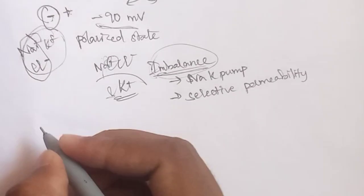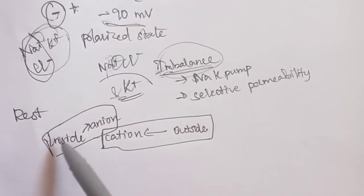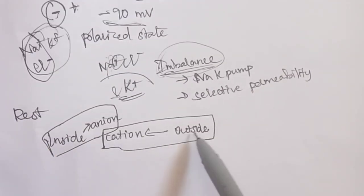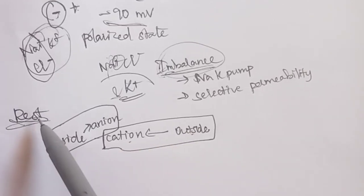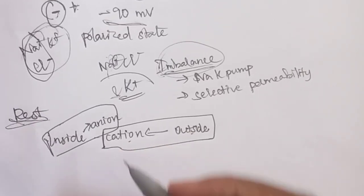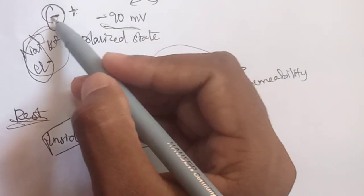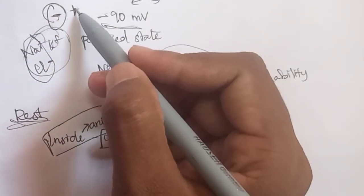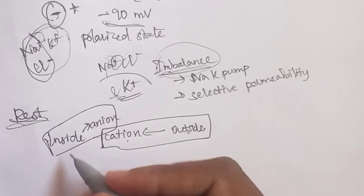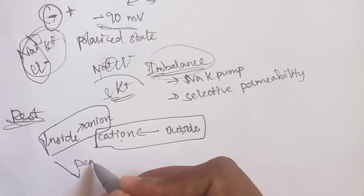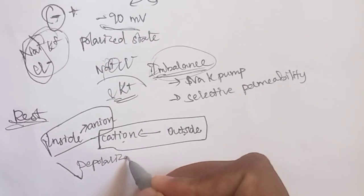Now, in the resting condition the inside is the same and the outside is the same. At resting time, this is the negative charge. Resting time: inside is the negative charge, outside is the positive charge. Suppose anion is the same. Depolarization — the extra anion is the same. Hyperpolarization.